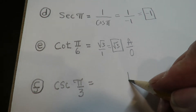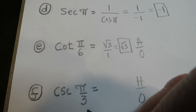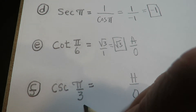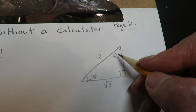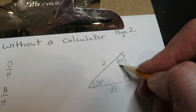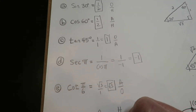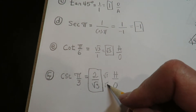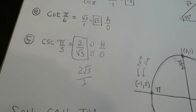Cosecant — that is going to be the hypotenuse over the opposite. Pi over three: you multiply that by 180 over pi and that'll convert it to 60 degrees. So I'm at 60 degrees. We need the hypotenuse and the opposite. The hypotenuse is two and the opposite is radical three. If you'd like, you can rationalize this — multiply top and bottom by radical three. You'd get two radical three over three, which is the rationalized form.